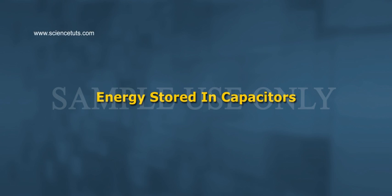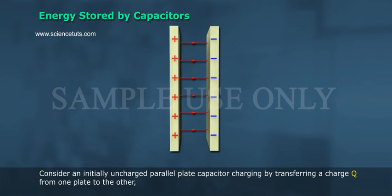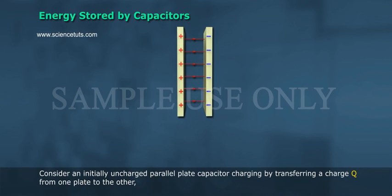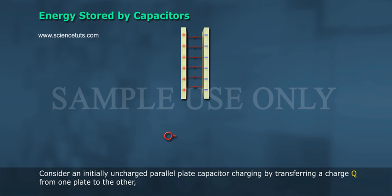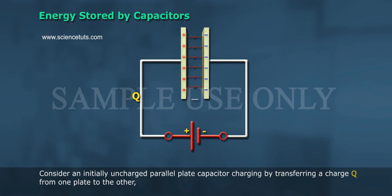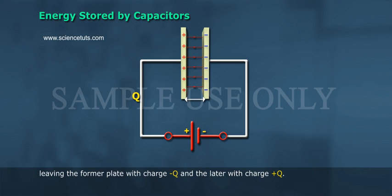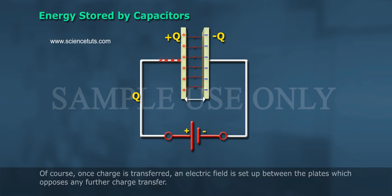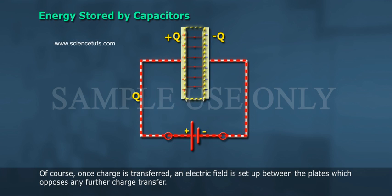Energy stored in capacitors. Consider an initially uncharged parallel plate capacitor charging by transferring a charge Q from one plate to the other, leaving the former plate with charge negative Q and the latter with charge positive Q. Once charge is transferred, an electric field is set up between the plates which opposes any further charge transfer.